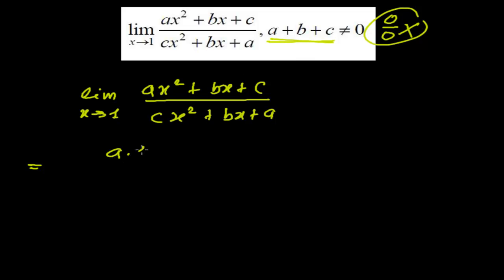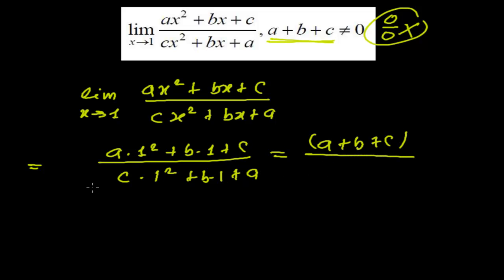Now we'll be getting a times one squared plus b times one plus c, divided by c times one squared plus b times one plus a. What we get here is a plus b plus c, and downstairs we also get c plus b plus a. A plus b plus c or c plus b plus a, both are the same thing, so we can cancel both and we'll get the answer one.